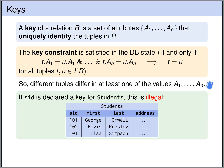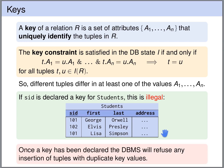For instance, if we declare that SID is a key for the table students, the following database state would be illegal — because here we have two students with student ID 101. We don't have the property that two different rows disagree on the attribute SID. So this key constraint is not satisfied, and the database management system would refuse any update that leads to such a state.